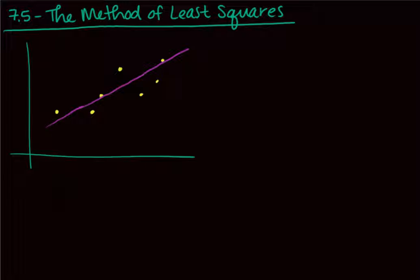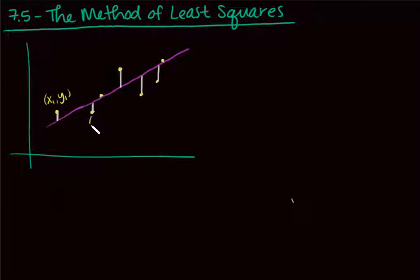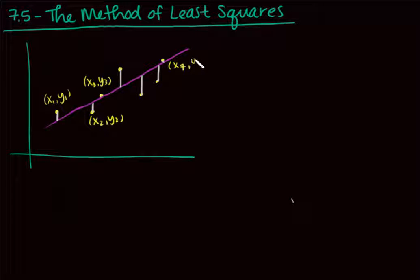What the least squares method does is take this difference between the points. If I use the line as my model, these gray lines show the difference between what the line predicts and the actual data. So if I call these points (x1, y1), (x2, y2), (x3, y3), all the way to (x7, y7) — though I can have as many as I want — I define this difference as e sub 1.